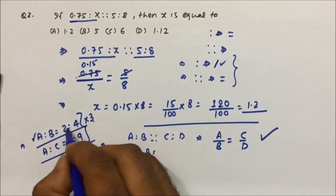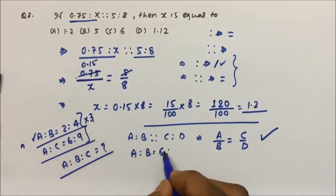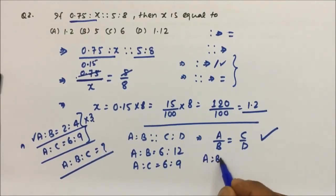Now A to B will be 3 into 2 is 6, and 3 into 4 is 12. And A to C equals 6 to 9. Now what will be my A to B to C ratio?